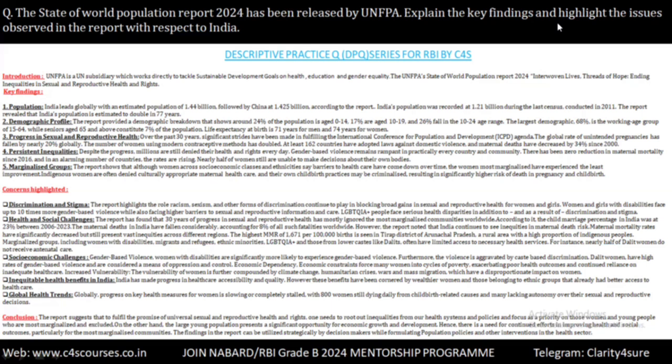In conclusion, the report suggests that to fulfill the promise of universal sexual and reproductive health and rights, one needs to root out inequalities and inequities from health systems and policies, giving more focus to women and young people who are most marginalized and excluded. On the other hand, India's large young population — with almost 68 percent in the working age group — presents a significant opportunity for economic growth and development. Hence, there is a need for continued effort in improving health and social outcomes, especially for the most marginalized communities. The findings in this report can be utilized strategically by decision makers while formulating population policies and other interventions in the health sector.